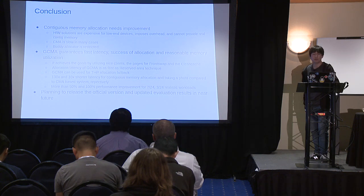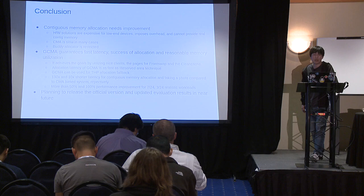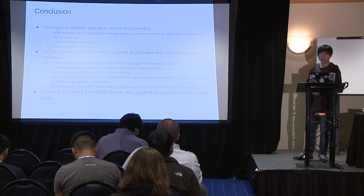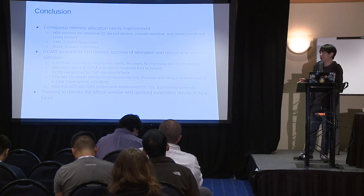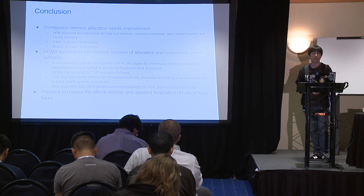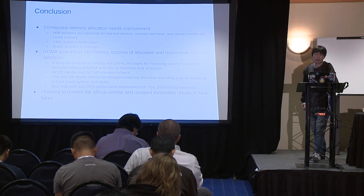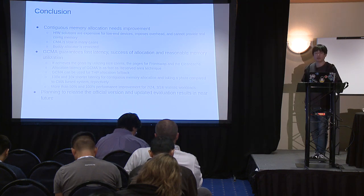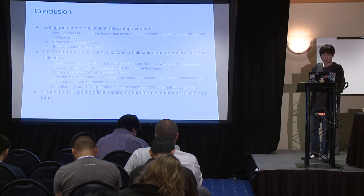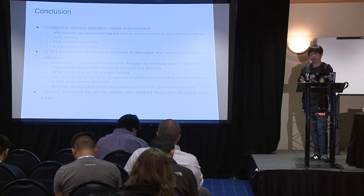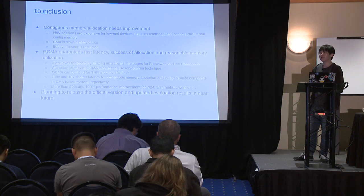In conclusion, contiguous memory allocation needs improvement. Hardware-based solutions are expensive for low-end devices, impose overhead, and cannot provide real contiguous memory. CMA is slow in many cases, and the buddy allocator is very restricted. GCMA guarantees fast latency, success of allocation, and reasonable memory utilization by utilizing nice secondary clients — pages for front swap and clean cache. Allocation latency with GCMA is as fast as the reserved area technique, and GCMA can be used for THP allocation. It shows 130 times and 10 times shorter latency for contiguous memory allocation and camera photo taking compared to CMA-based systems respectively, and more than 50% and 100% performance improvement for 7 of 24 and 3 of 24 realistic workloads. We are planning to release the official version and update evaluation results in the near future to the Linux kernel community.